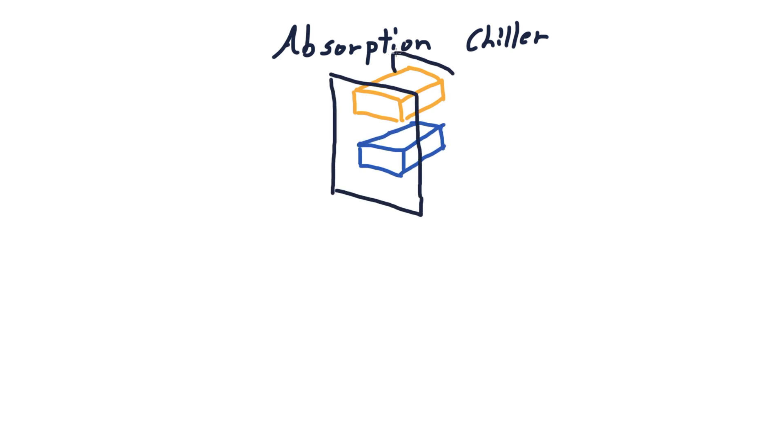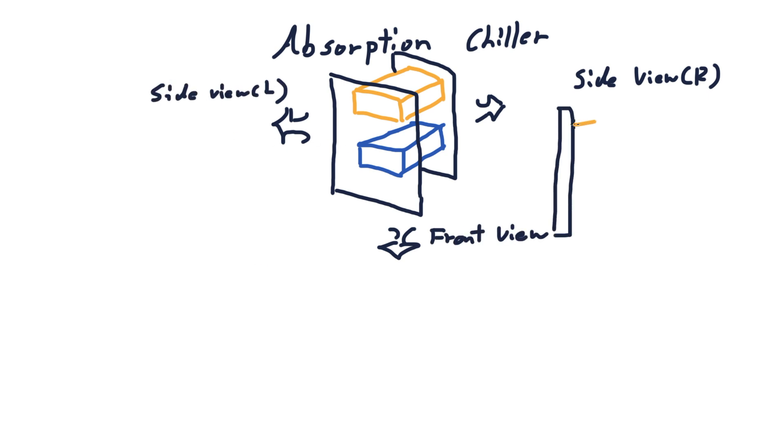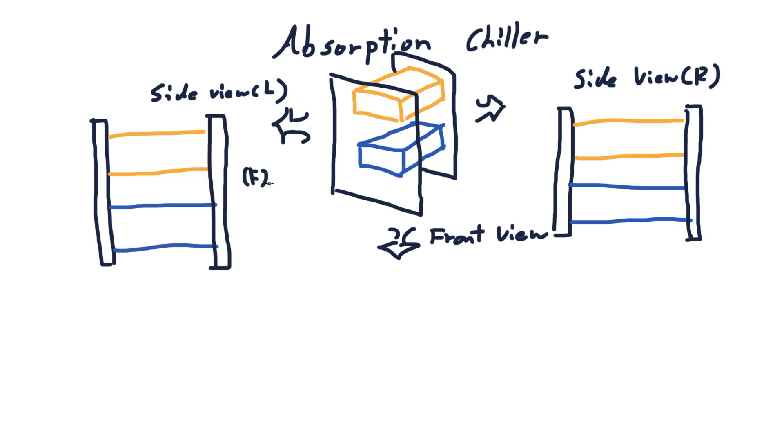And in this video, I'm also going to draw this absorption chiller in three different perspectives to better explain the mechanics of this machine. We'll first have the side view of the machine from the right, and then from the left. And the front and back face of this machine is also labeled to better locate different parts. And then we have the front view of the machine.